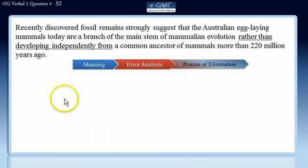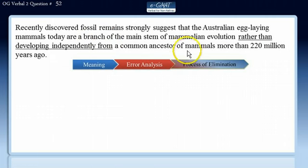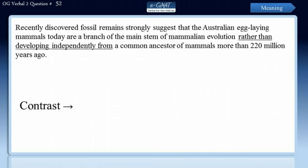So let's begin. Recently discovered fossil remains strongly suggest that the Australian egg-laying mammals today are a branch of the main stem of mammalian evolution, rather than developing independently from a common ancestor of mammals more than 220 million years ago. This sentence presents a contrast, and the phrase 'rather than' is the marker of that contrast.